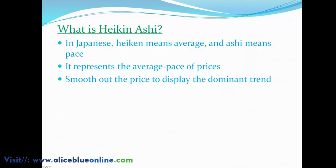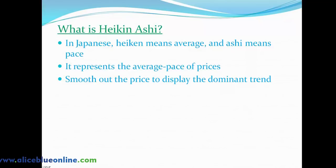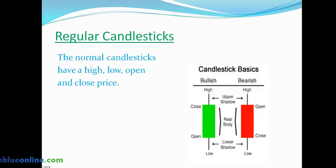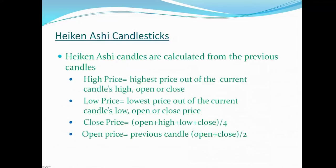What is Heikin Ashi? In Japanese, 'Heikin' means average and 'Ashi' means space — it represents the average pace of price. It smooths out the price to display the dominant trend. Regular candlesticks have high, low, open, and close price, as shown in the picture.